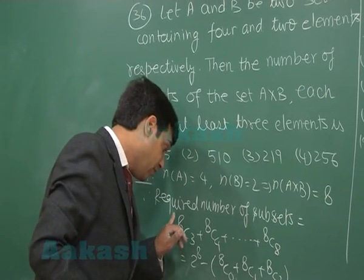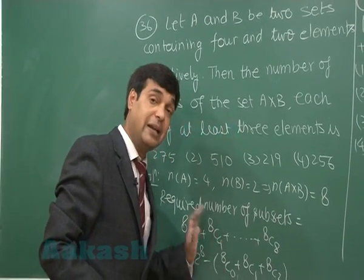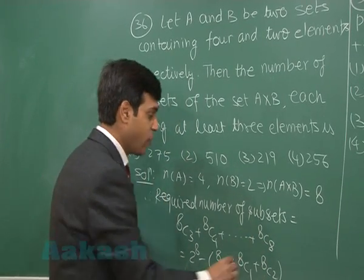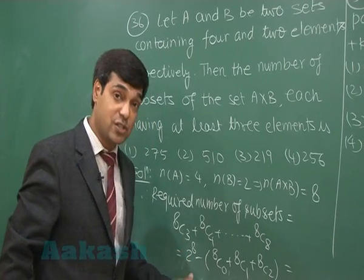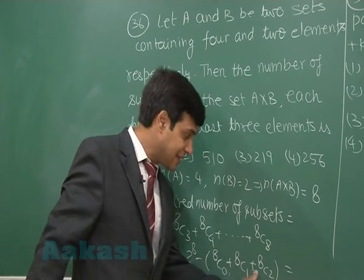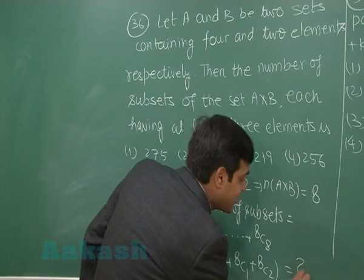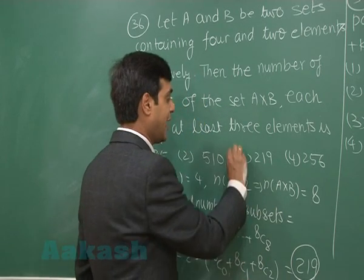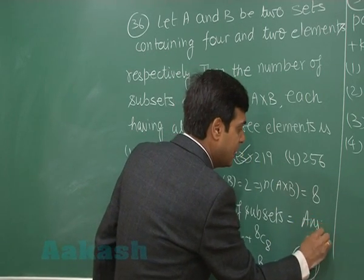What we did: we selected 3 out of 8, or 4 out of 8, and so on till 8 out of 8. Hence the required number is 2 to the power 8, that is 256, minus 1 plus 8 plus 28, which equals 37. So the correct answer comes out as 219, that is option number 3.